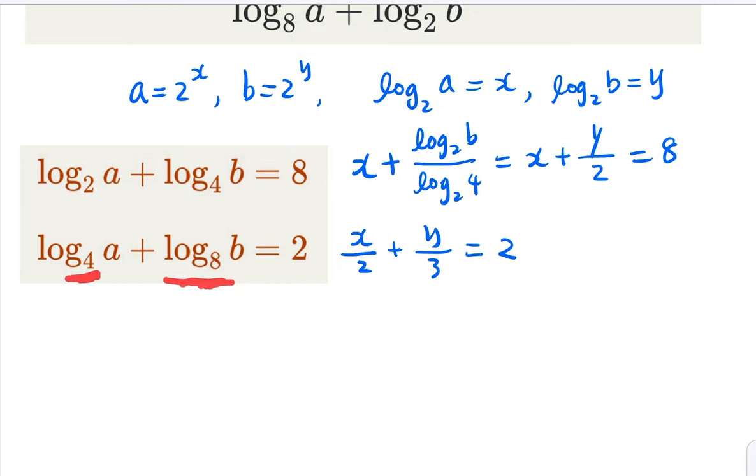So now you have a linear equation here. Try to cancel x. So what you do is, maybe you multiply this by 2. So what you get is going to be x plus 2 over 3 times y equal 4.